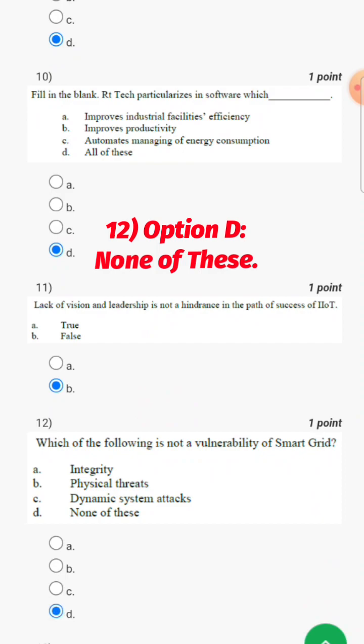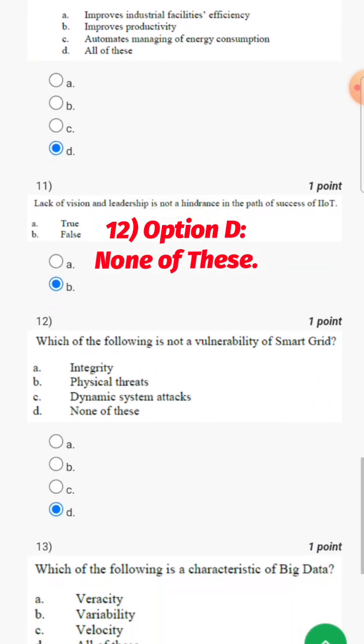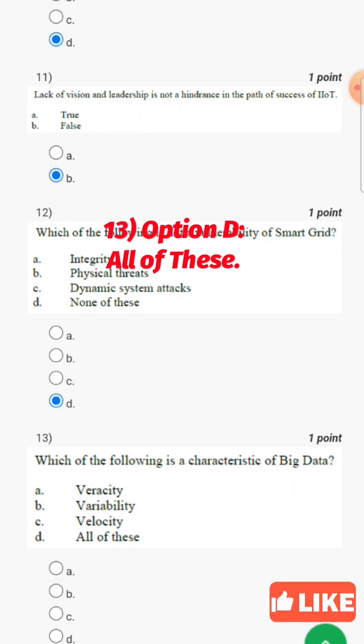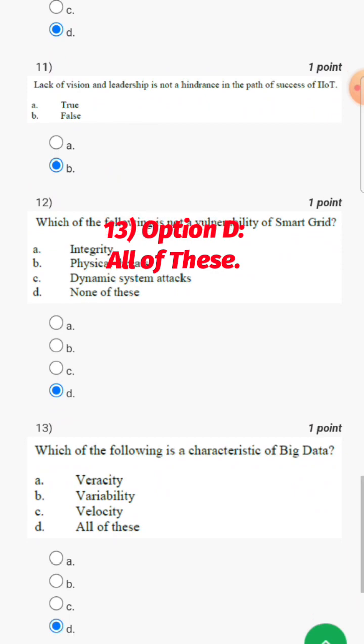Because all these are the vulnerabilities of smart grid. Which of the following is the characteristic of big data? Big data is characterized by seven V's: volume, velocity, variety, variability, veracity, visualization, and value. So here all these three are included in the seven V's, so all of these will be the correct answer, that is D.